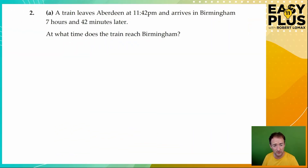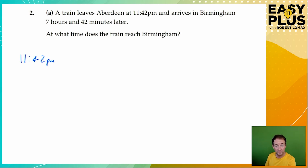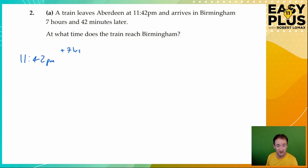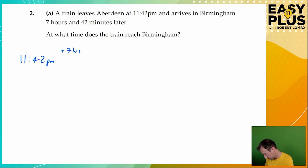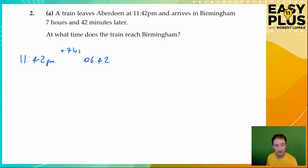Let's apply the same sort of approach to this question. We start at 11:42 p.m., and we need to add seven hours onto that. Six hours later would be 5:42 in the morning, so seven hours later is 6:42. You could do one hour and then six hours if you wanted to break it down further. And now we've got 42 minutes to add, but that could be a little bit confusing, so let's break that down as well.